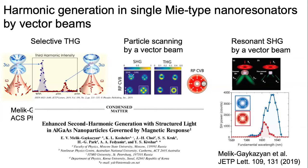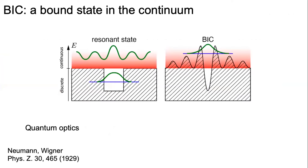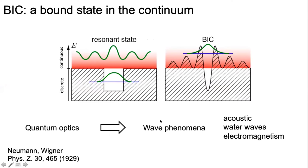Some special state inspired by the mechanism of bound states in the continuum (BIC). This concept came from quantum optics as a theoretical concept, where one can indeed have a state in the area of a continuous energy region.